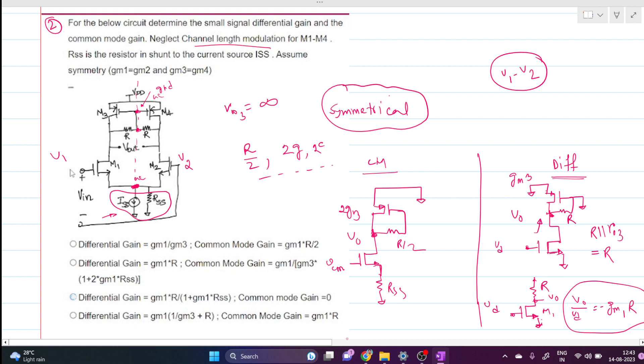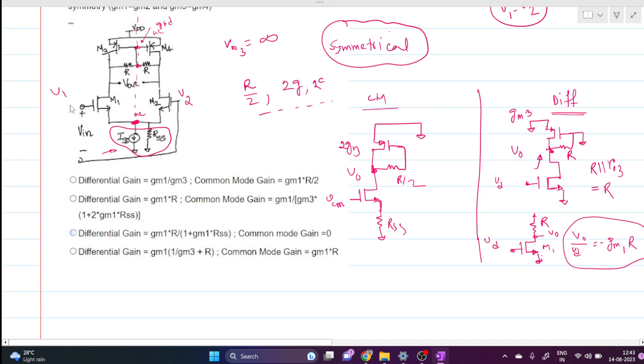This is our Vout. What is the gain? We can think that no current can go to this branch, I equals zero here, so no voltage drop across R by 2. This is basically a short circuit. If this is short circuit, the looking impedance here is 1 over 2gm3.